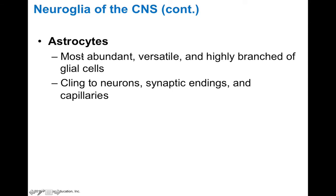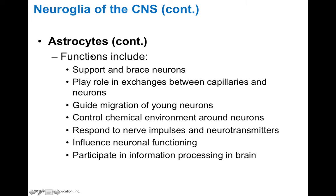Astrocytes are the most abundant glial cells. They're called astrocytes because 'astro' means star and 'cyte' means cell, so they're a star-shaped cell. They're versatile and highly branched — hence the star appearance — and they cling to neurons and synaptic endings as well as capillaries. By being highly branched, they can support and brace neurons, and they play a role in exchanging materials between capillaries and neurons, making them part of the blood-brain barrier.